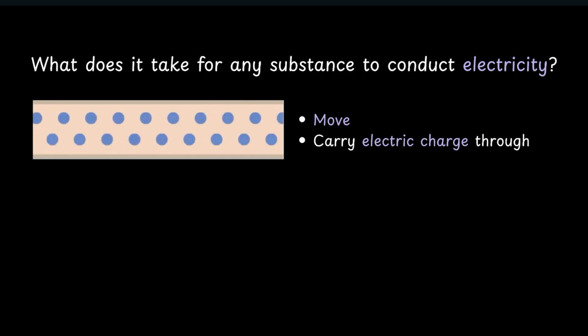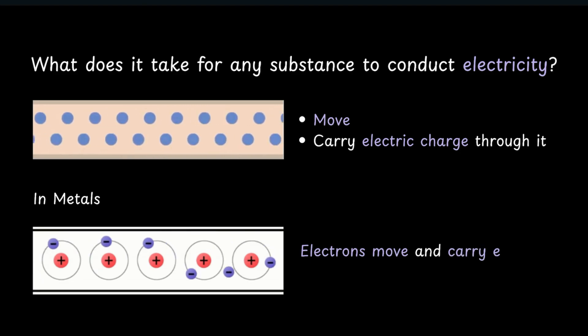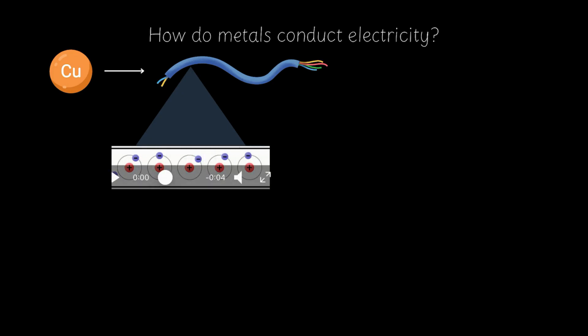And in metals, that something is the free electrons. Free electrons move through metals and carry electric charge. So when we create wires out of metals to be used in circuits, those wires already contain free electrons inside them.